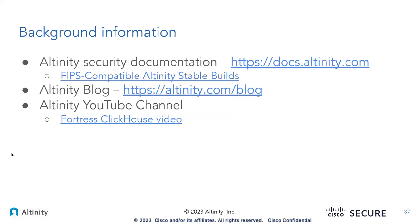Just a bit of background information: this points to Altinity. You can also go to government.gov sites to find out about FedRAMP as well as FIPS 140-2 — that information is all publicly available.